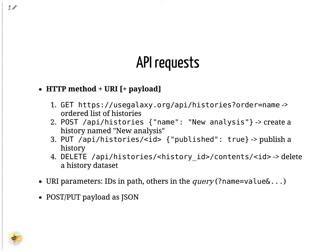In the second example, the POST method is used to create a resource on the server, in this case a new history. Parameters for the POST request are passed as a payload in JSON format. In this example, the payload contains the new name for the history to be created. In the third example, we use the PUT method to update an existing resource, in this case to make a history public. The history to modify is identified by appending its ID to the history's URI. The parameters for PUT requests are also passed in a payload.